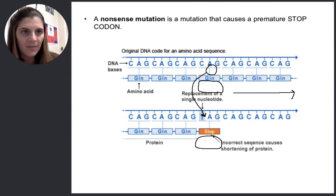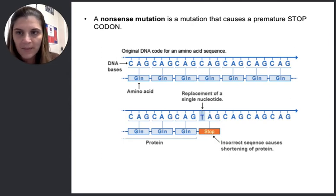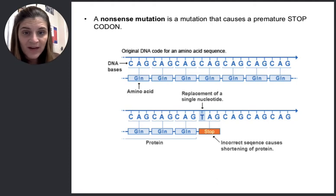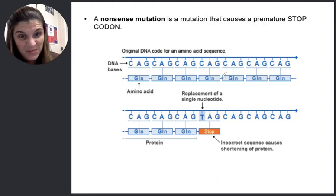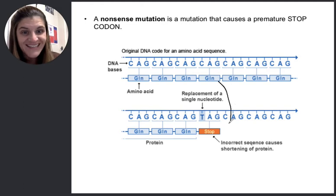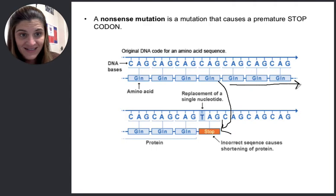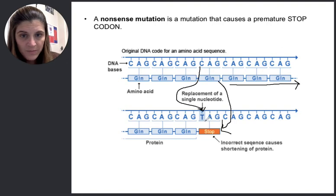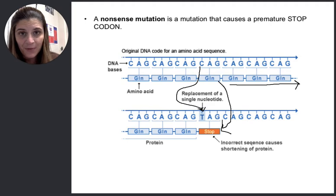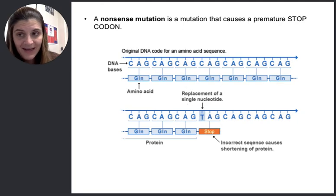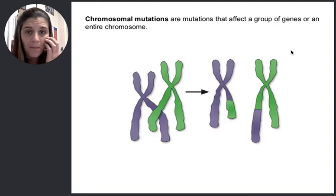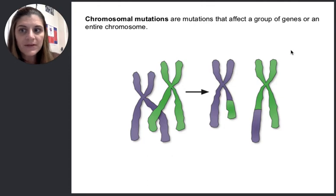Here's our last type — it's called a nonsense mutation. This happens whenever we've made a DNA mutation that results ultimately in a premature stop codon. Notice in this one we were supposed to have a bunch more glutamines down the line. Whenever we changed that C to a T, that is ultimately going to code for a stop codon, and now we're not going to have any of those amino acids from that point forward. That protein is probably going to be messed up and not work right, which again can result in things like genetic disorders.